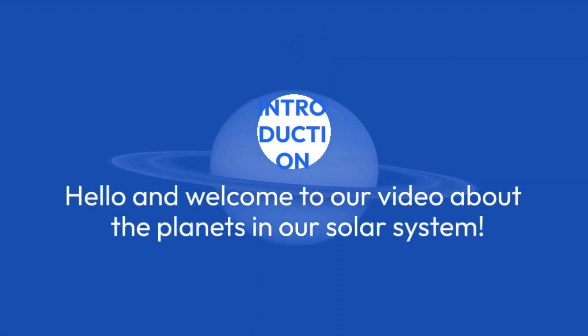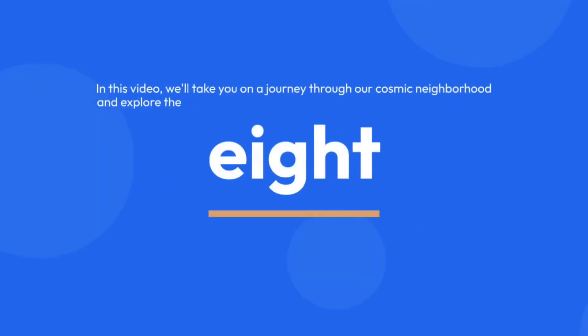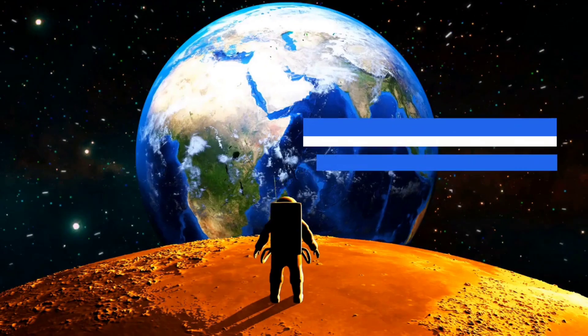Hello and welcome to our video about the planets in our solar system. In this video, we'll take you on a journey through our cosmic neighborhood and explore the 8 planets that orbit around our sun.